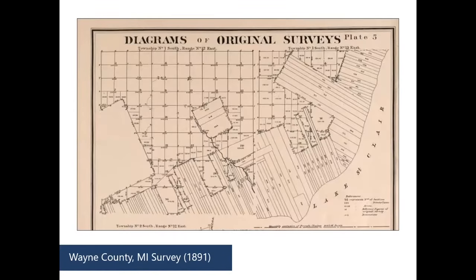Next, I have a survey map from Wayne County, Michigan. Surveys are similar to cadastral maps because they show the lines of specific plots or parcels of land. We see a lot of these survey maps created by the General Land Office as the western part of the United States was divided up, sold off, and settled.